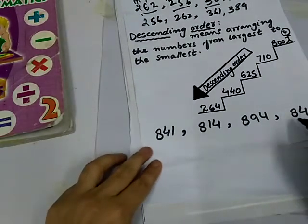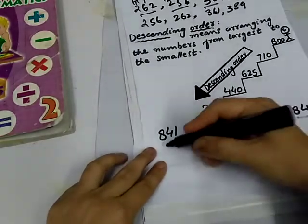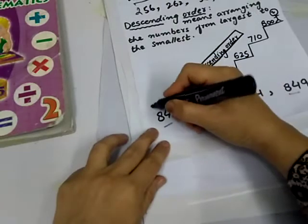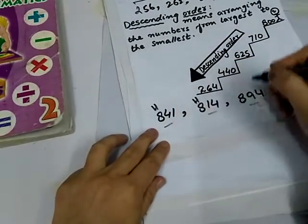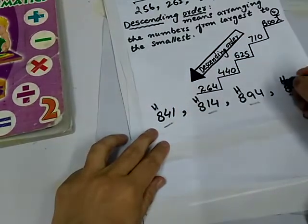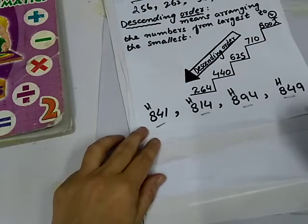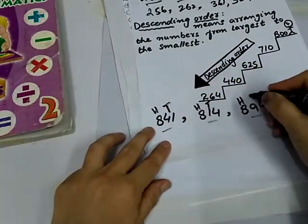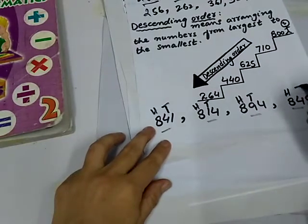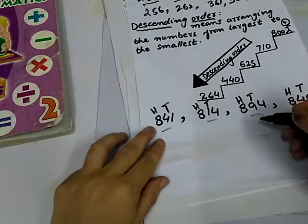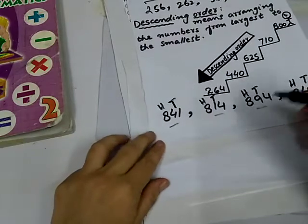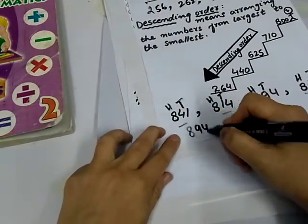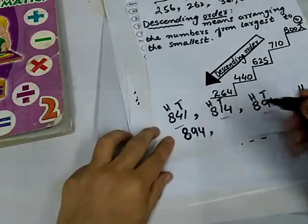Now, check the digits. They are all three digits numbers. Now, check the first place value. 800, 800, 800 and 800. Now, check the 10 value. 4, 10, 1, 10, 9, 10, 4, 10. So, now 9 is the bigger place value. Write 894, the greatest number.